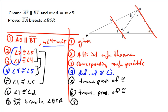And the reason for that is just the definition of angle bisector. The definition of angle bisector says an angle bisector bisects an angle into two congruent angles.